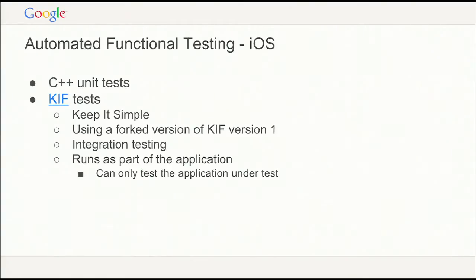For iOS, we also share some code with the rest of Chrome, so we have some C++ unit tests. The majority of our tests are KIF tests — it's an open-source framework called Keep It Functional. We actually forked KIF before version 2, because version 2 was a significant rewrite with a very different API and we had a lot of KIF 1 tests that were working for us. This is integration testing run inside the application, but that's okay because we don't have as tight integration on iOS with the platform.